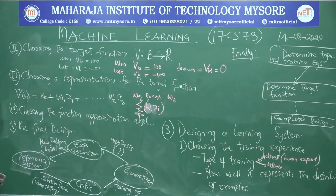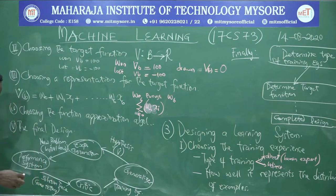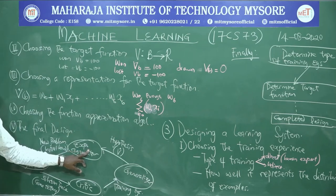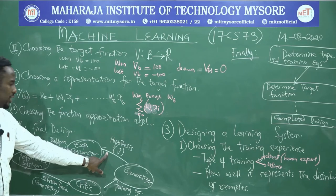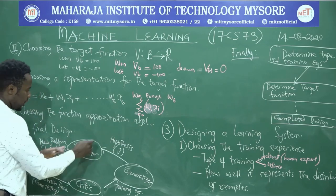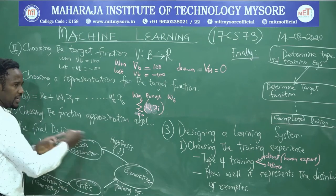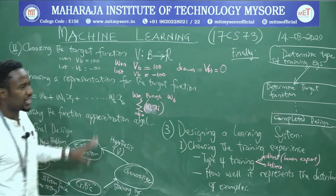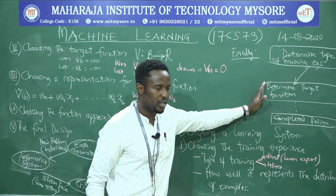These are theoretical concepts. To summarize: we choose the training experience, followed by the target function, followed by representation of the target function, followed by choosing the function algorithm, and then the final design. In the final design, it's a cyclic process — starting from the experiment generator through the performance system and back.